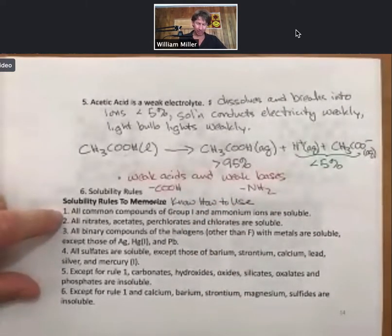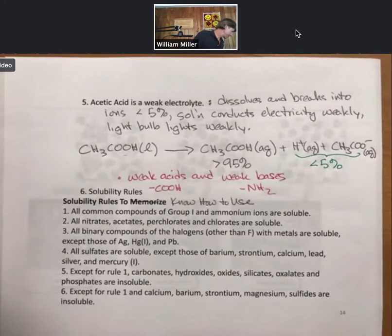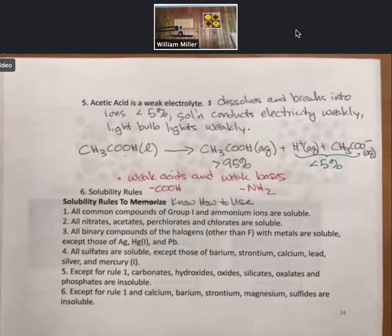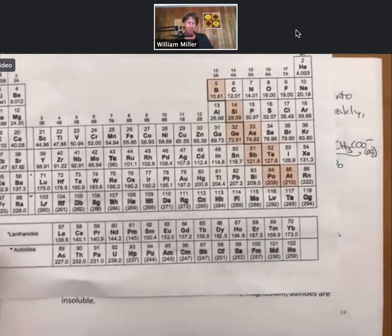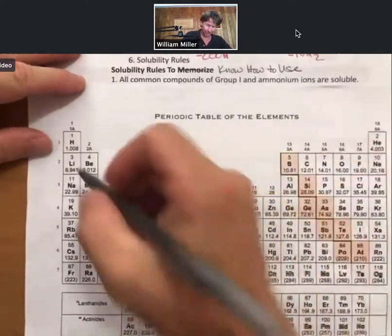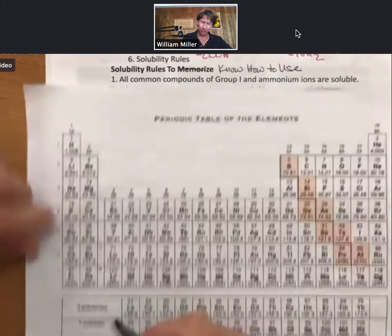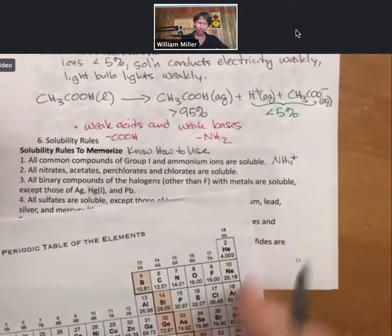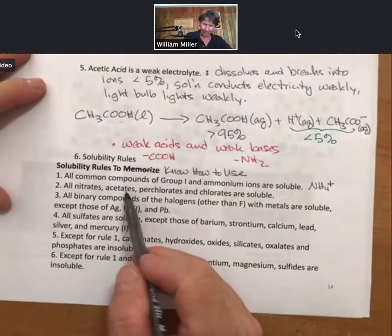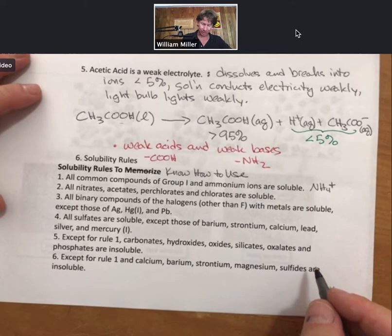For example, all common compounds of Group 1 and ammonium ions are soluble. I know I have my periodic table around here. There we go, got away from me a little bit there. All right, so all common compounds of Group 1 and ammonium ions. Here's Group 1, so anything that has lithium, sodium, potassium, rubidium, cesium - we won't see francium - or ammonium, NH4+, are soluble. Anything with all nitrates, acetates, perchlorates, and chlorates are soluble.